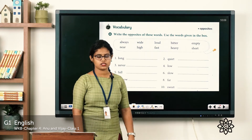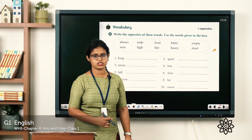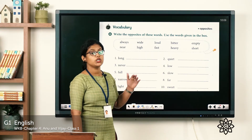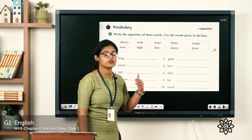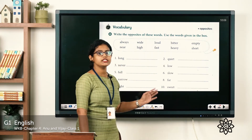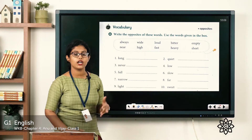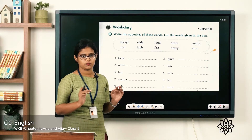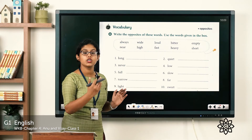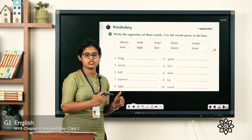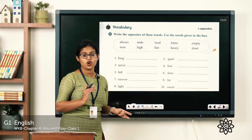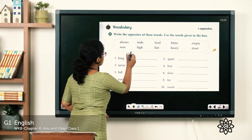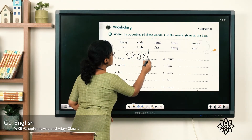Coming to the next exercise — we have already learned about opposites. Here you have about 10 questions, and from the box you have to find the opposite words. Let's start with the first one: 'Long.' What is the opposite word for long? For example: 'I have a long pencil' — the opposite is 'I have a short pencil.' So the opposite for long is short. Let's write here: S-H-O-R-T.